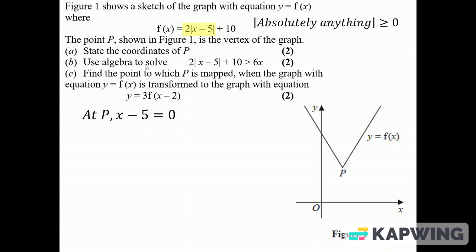So at the minute, that minimum point, that vertex, the x - 5 must be zero. So the x coordinate is 5 and the minimum is 10. So x is 5, y is 10. It's a bit like when you complete the square and find the minimum point. Then it says use algebra to solve that inequality.